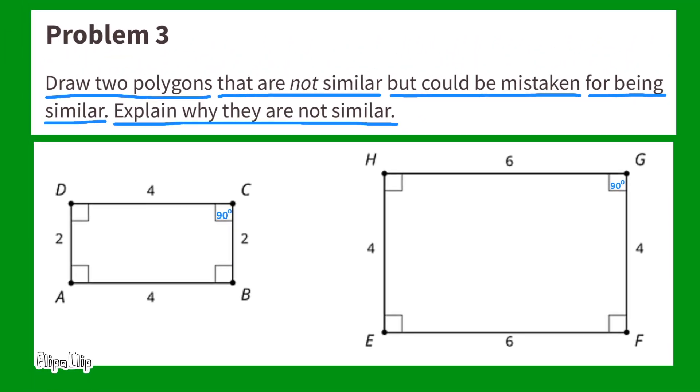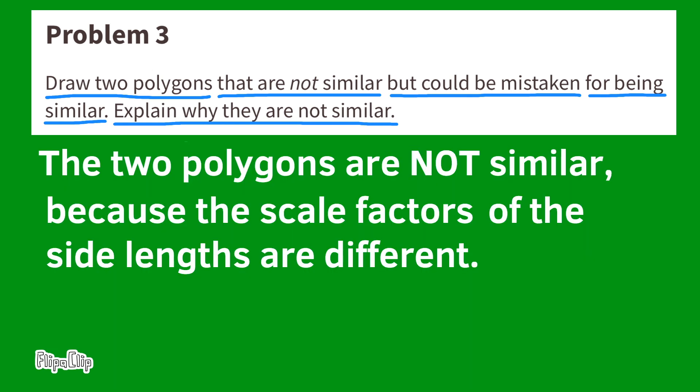Line segment BC is one-half scale factor of line segment FG, and line segment CD is two-thirds scale factor of line segment GH. Here's another look. Two is half of four, making a scale factor of one-half, and four is two-thirds of six, making it a scale factor of two-thirds. The two polygons are not similar because the scale factors of the side lengths are different.